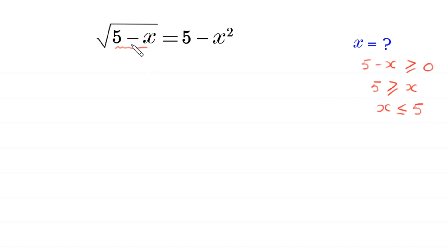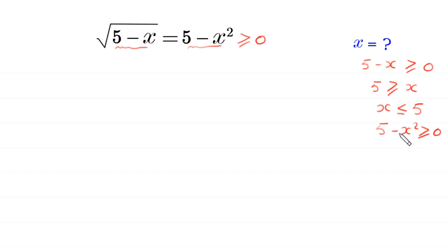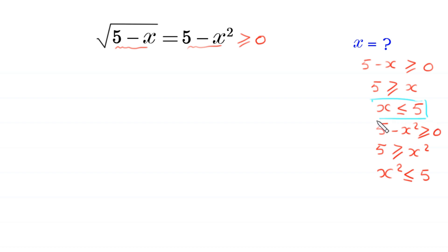Because the left hand side of this equation must be greater than or equal to 0, the right hand side, 5 minus x squared, must also be greater than or equal to 0. This means x squared must be less than or equal to 5. So we have two conditions: x ≤ 5, and x² ≤ 5.